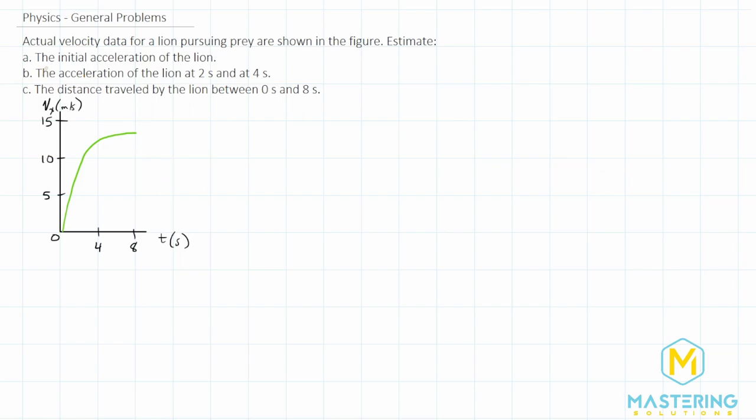For part A, they want us to give the initial acceleration of the lion. So we have a velocity versus time graph. To get the acceleration from that, we need to find the slope of the line because the slope is equal to the rise, which is velocity, over the run, which is time. And if you remember, the formula for acceleration is velocity over time. So that is why we need to find the slope for the line to give us the acceleration.